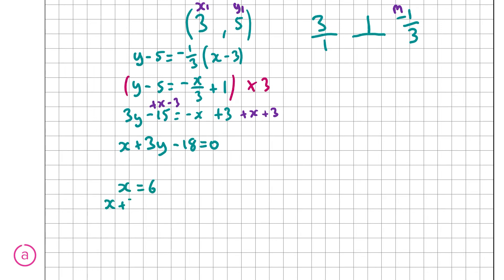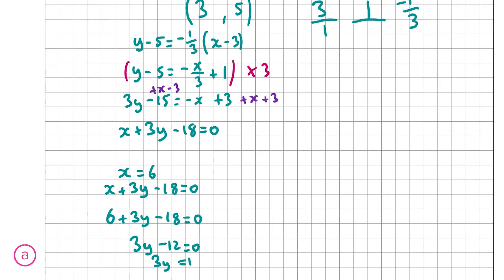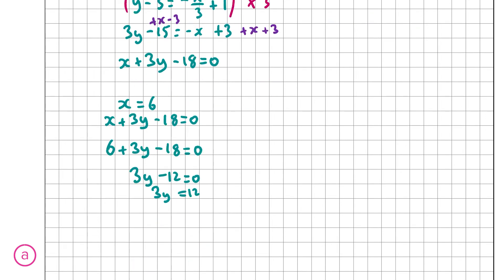Now we find the intersection of x plus 3y minus 18 equals 0 and x equals 6. Substituting x = 6: 6 plus 3y minus 18 equals 0, giving 3y minus 12 equals 0, so 3y equals 12. Dividing by 3, y equals 4. Therefore the circumcentre is at coordinates (6, 4). That's the answer for part 3.